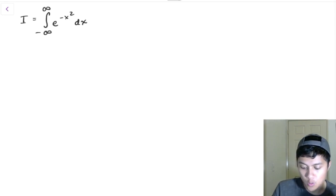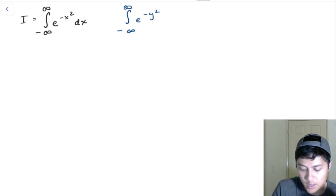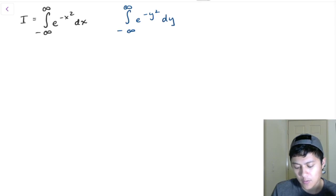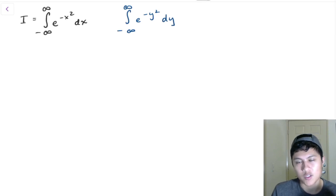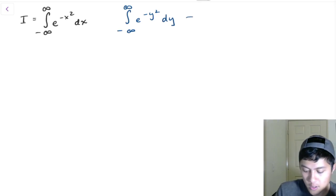Now compare this to this other integral: the integral from negative infinity to positive infinity of e to the negative y squared dy. Upon second glance, you might think — how is this any different from the first? And funny enough, it's not any different at all. These two integrals are equivalent. It doesn't matter what I call the variable that I'm integrating over — it's just e to the negative variable squared d variable from negative infinity to positive infinity. So these are equivalent; this is also equal to i.